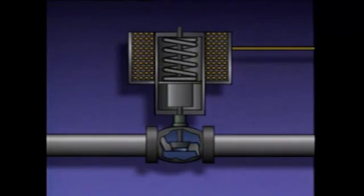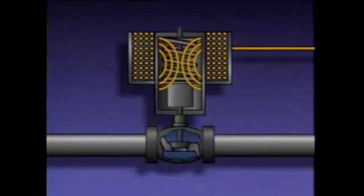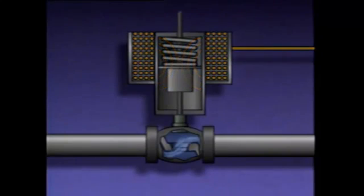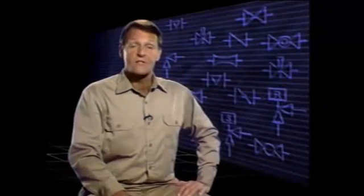When current flow starts or stops, the movement of the armature is almost instantaneous. When current flow starts, the actuator will fully open the valve; when current flow stops, it will fully close the valve. There is no intermediate or in-between position, so there is no way for a solenoid actuator to throttle a valve. Since most solenoids operate this way, they are typically used with on-off valves.